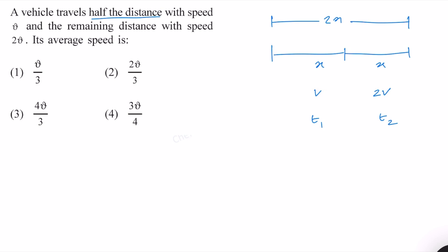So this is the distance, this is speed, this is time taken. We know that v average is equal to total distance traveled divided by total time taken. Therefore, this will be equal to 2x divided by t1 plus t2.